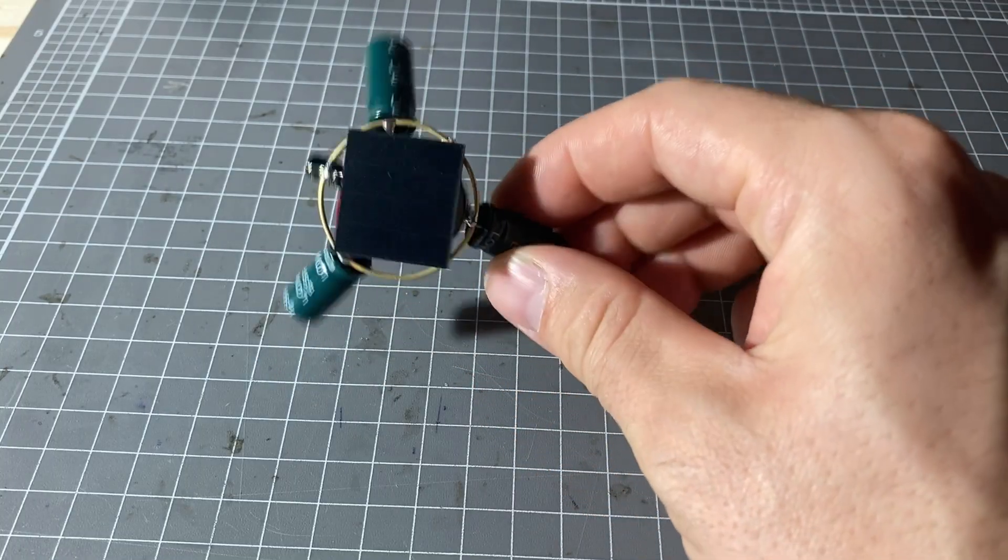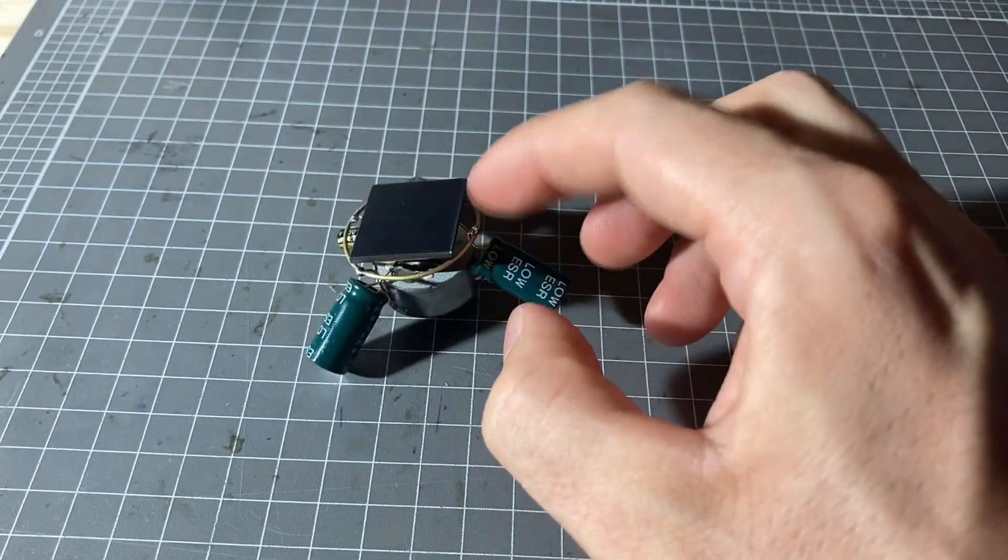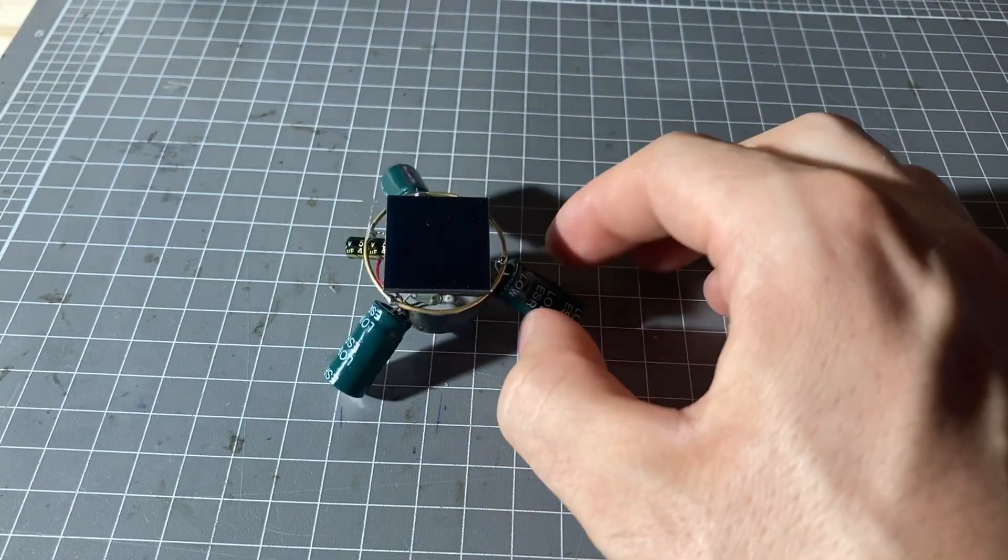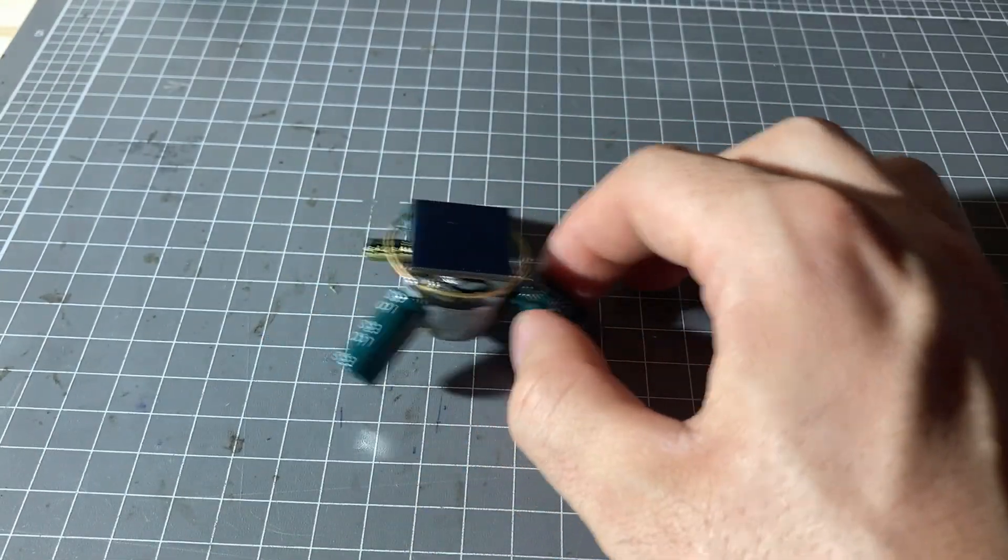And this here is the finished robot. So you can see I've bent these capacitors down so it would just be easy to tip over in any direction and then when this scoots along it'll bump into something and then in theory it'll go back the other way.